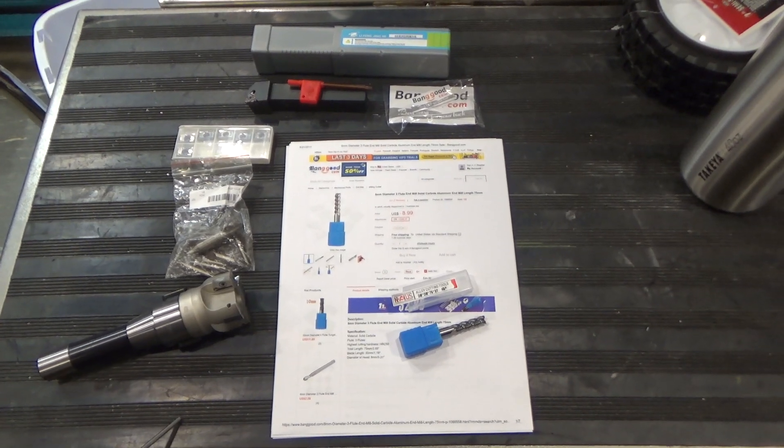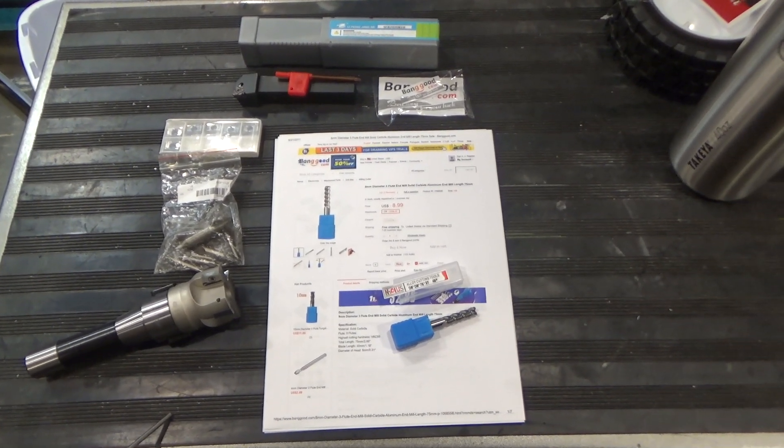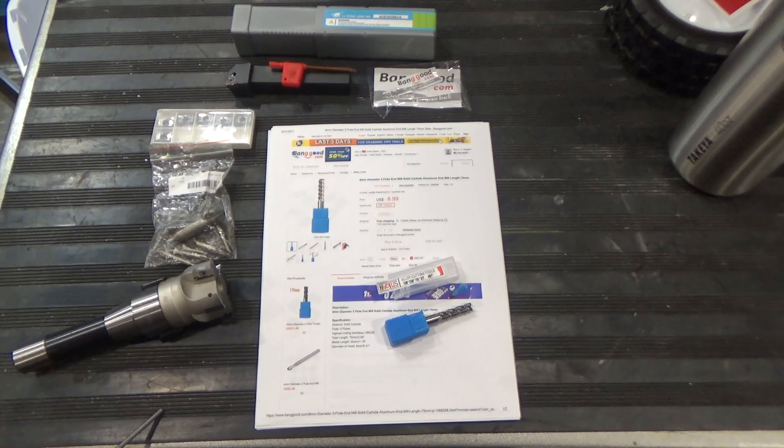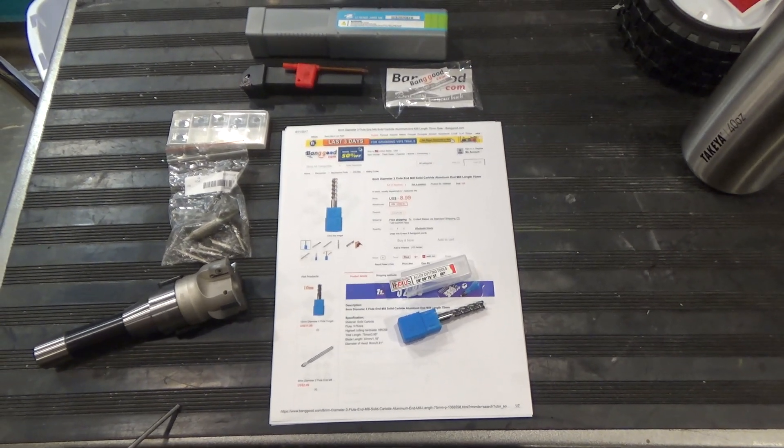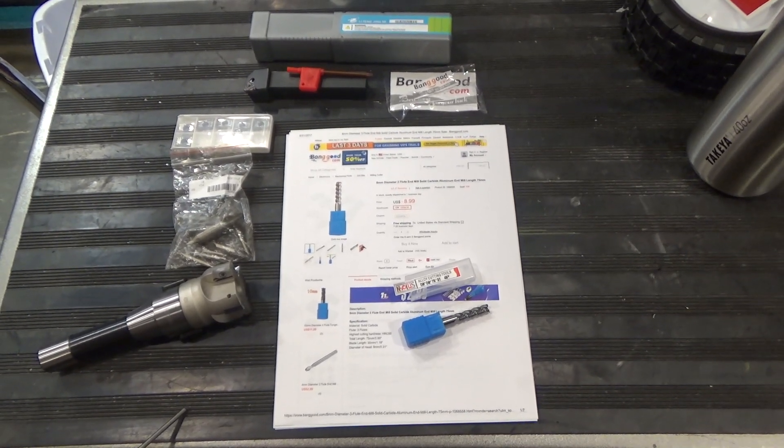Hi and welcome to this quick tool review. This review will be for one of the Banggood products that was sent to me to be evaluated. In this case, it will be an 8 millimeter solid carbide end mill.